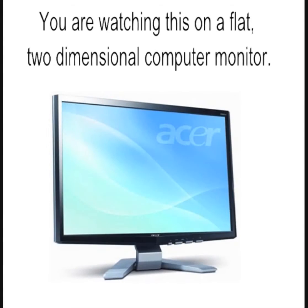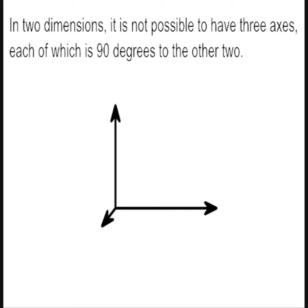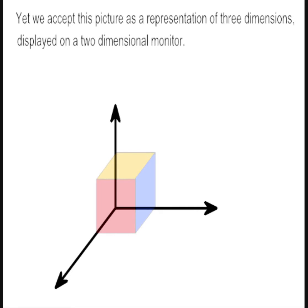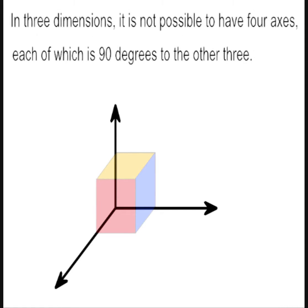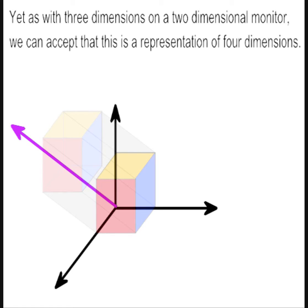You are watching this on a flat, two-dimensional computer monitor. In two dimensions, it is not possible to have three axes each of which is 90 degrees to the other two. Yet we accept this picture as a representation of three dimensions displayed on a two-dimensional monitor. In three dimensions, it is not possible to have four axes each of which is 90 degrees to the other three. Yet, as with three dimensions on a two-dimensional monitor, we can accept that this is a representation of four dimensions.